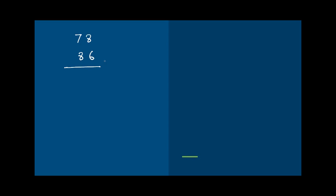Let's take two numbers: 78 and 86. From childhood we've been taught to calculate like this — 8 plus 6 equals 14, carry forward, 7 plus 8 plus 1 equals 16, answer 164. But if you practice this method for a long time, it will actually reduce your speed. It's the wrong method because you need to write it down, carry forward, and then write the answer — you can't do it mentally.